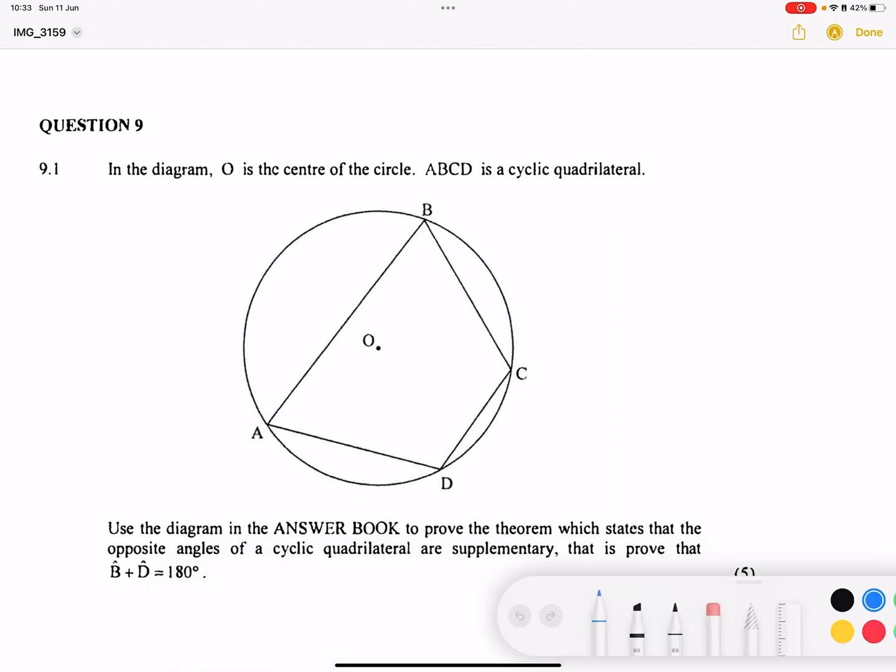So what you simply do is you're going to construct, in this case, radii. I'm going to construct line OA as well as line OC from the center to the circumference, and so they become our radii in this case. So that means that OC is equal to OA. Now, what are we going to do with those lines?